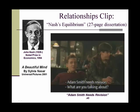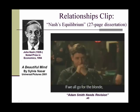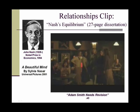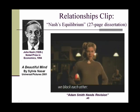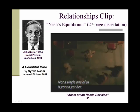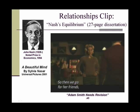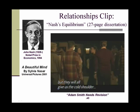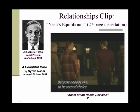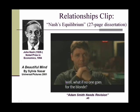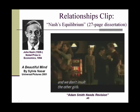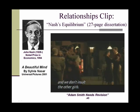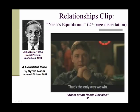Adam Smith needs revision. If we all go for the blonde, we block each other — not a single one of us is going to get her. So then we go for her friends, but they will all give us the cold shoulder because nobody likes to be second choice. We'll win if no one goes for the blonde — we don't get in each other's way, and we don't insult the other girls. That's the only way we win.